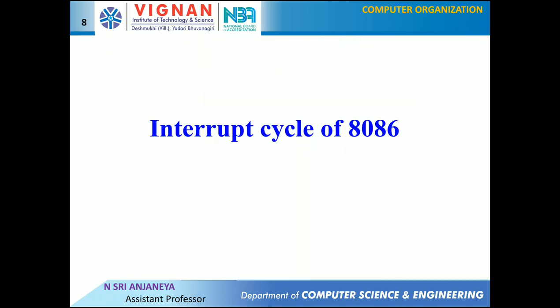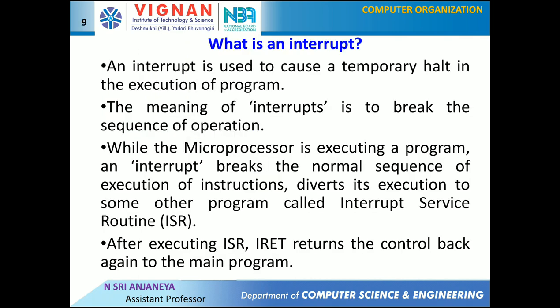Next, we will see the interrupt cycle of 8086. What is an interrupt? An interrupt causes a temporary halt in the execution of a program — it breaks the normal sequence of operations. While the processor is executing a program, an interrupt diverts execution to another program called the Interrupt Service Routine (ISR). After executing the ISR, control returns back to the main program. Whenever an interrupt occurs, the CPU suspends the current running program, control goes to the requested Interrupt Service Routine, and after its execution, control returns to the main program where it was suspended.